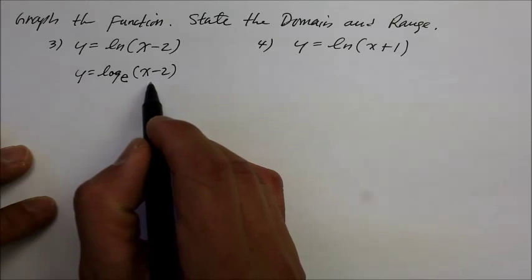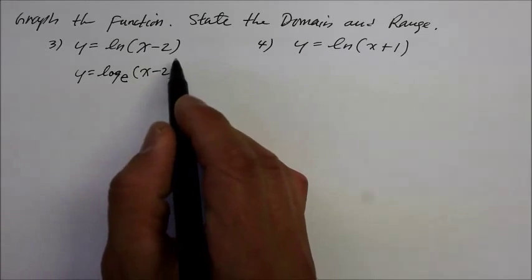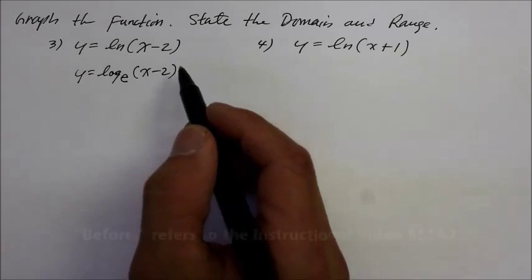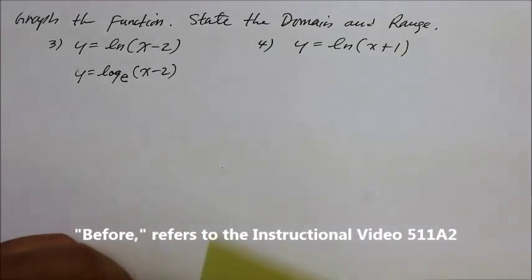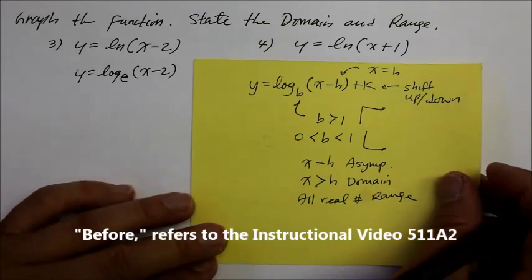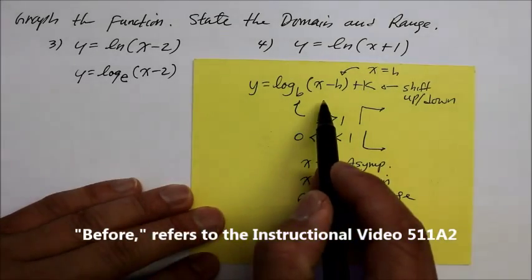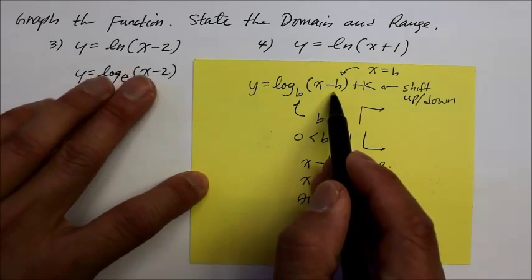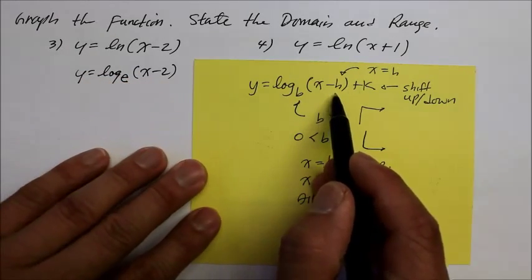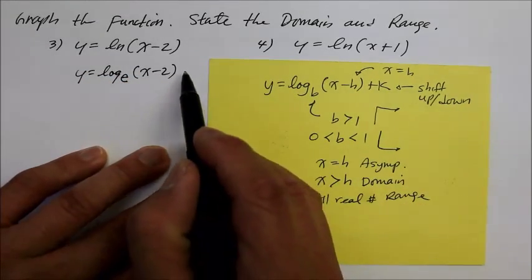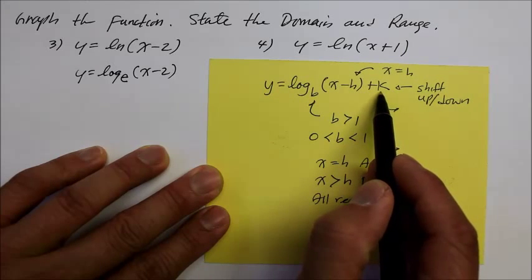Now there's something unique about this situation. You see that parentheses? There wasn't one before, but let me bring you back the general form of the log function. Remember the components of each one of them? In this case, we do have an h value, but since there is no single integer out here, there is no constant k.